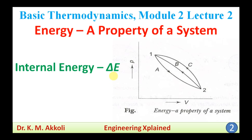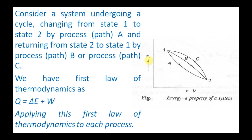This internal energy is denoted as delta E, also called simply energy. We have to prove that it is a property of a system. To do so, we consider different processes changing the state from one state to another, shown on a PV diagram.